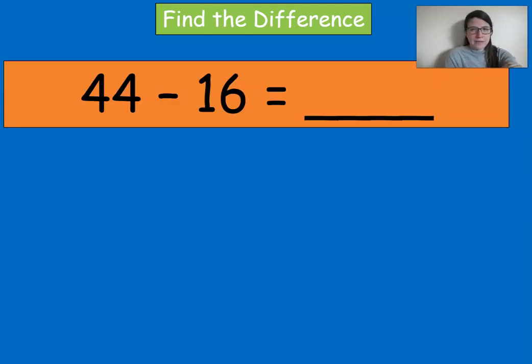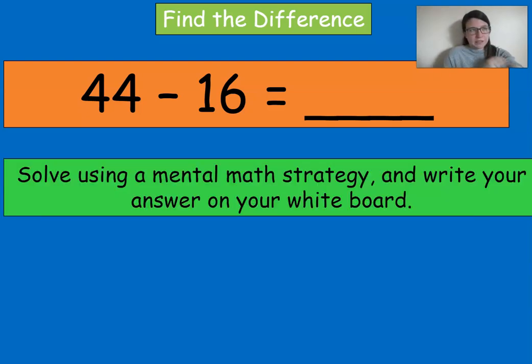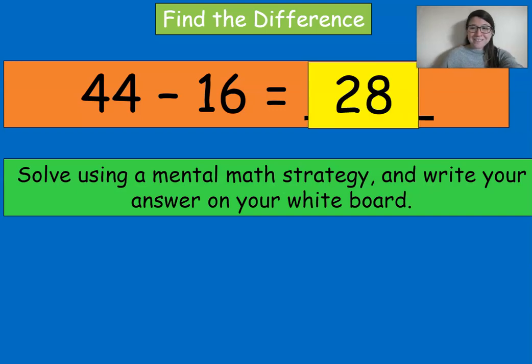All right, 44 minus 16. This one's a little bit trickier. Solve mentally, write down your answer, pause and come back when you're ready to go over it. 28. Good. So what I would do for this one is the same thing that I did for the first one. I would use the compensation strategy. 16 to its next 10 is 20, so I'm adding four. Whatever I do to one in subtraction, I have to do to the other. So 44 becomes 48, so I get 48 minus 20 is 28.